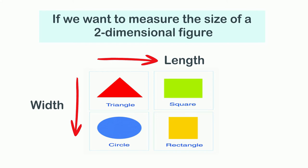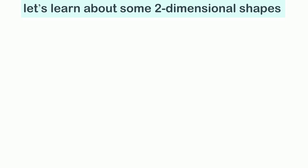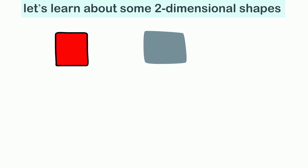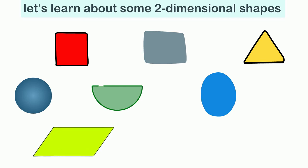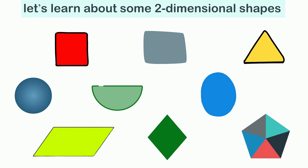Now let's learn about some two-dimensional shapes such as square, rectangle, triangle, circle, semicircle, oval, parallelogram, rhombus, and pentagon.